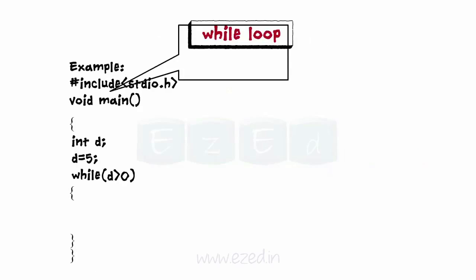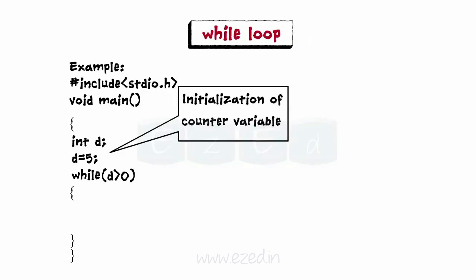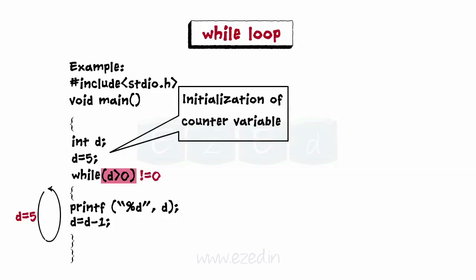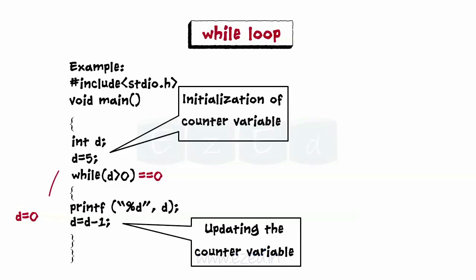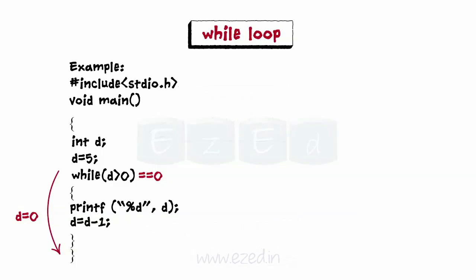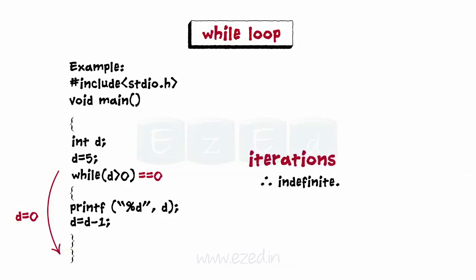In this example, the loop is initialized by assigning d a value. Then, the test condition is evaluated. As the result of evaluation is non-zero, the statements within the loop are executed and the counter variable is updated by decrementing it by one. Again, the test expression is evaluated. This process will continue till the result of evaluation is zero, that is when d is equal to zero. As soon as the result of evaluation becomes zero, the statement exactly after the loop is executed. A while loop is called an indefinite loop as the number of times it will iterate is undetermined.